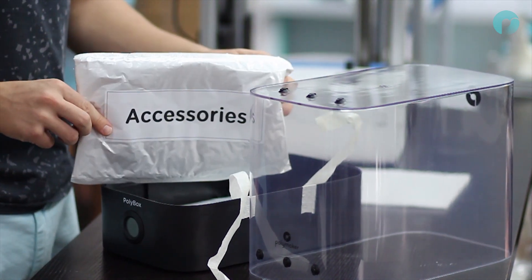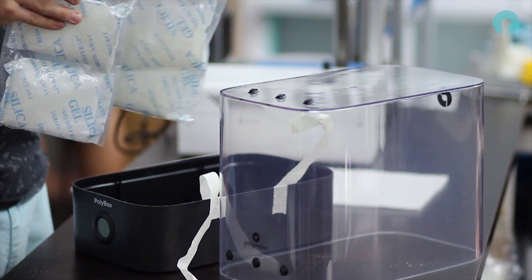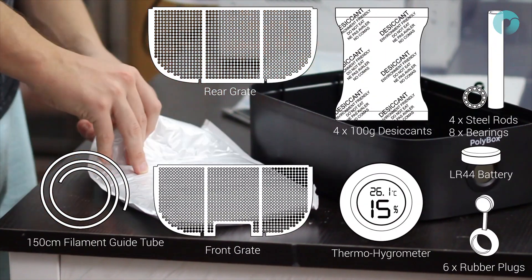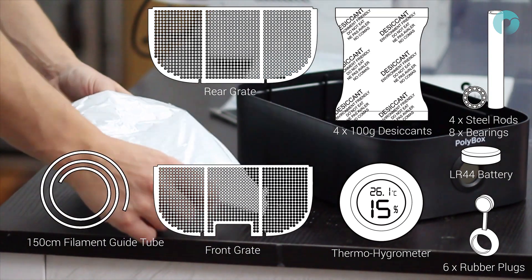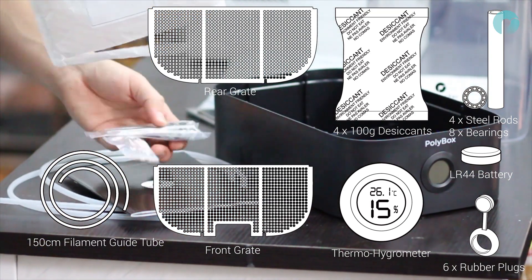The Polybox comes with 400g desiccant bags, 2 grate covers, 6 rubber plugs, 4 steel rods and 8 bearings, 150cm of filament guide tube, 1 LR44 battery and a thermohygrometer.